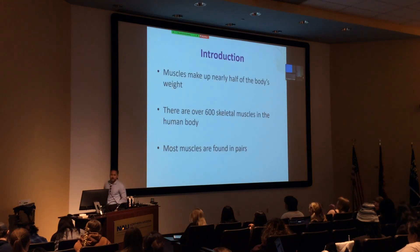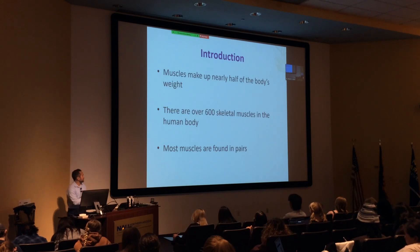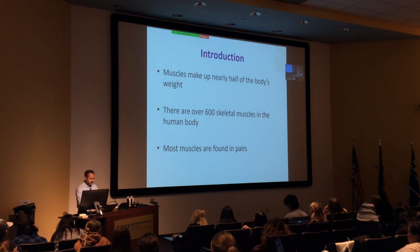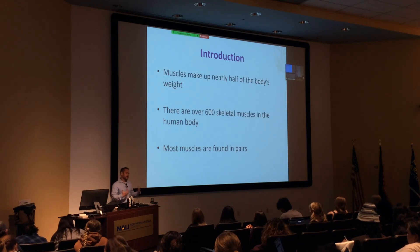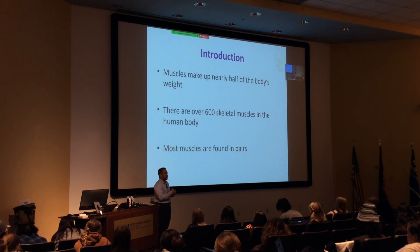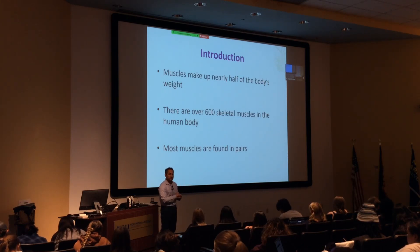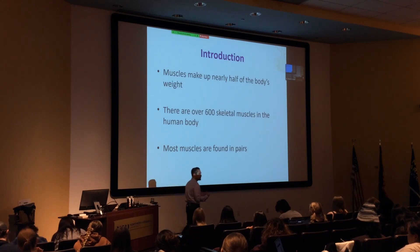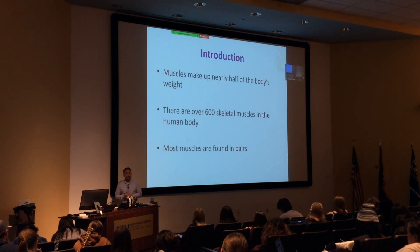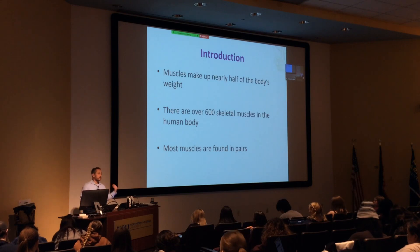So, muscle physiology. Half the body's weight is made up of muscles. There are over 600 muscles in our body, and most of these are found in pairs. You've covered this pretty extensively in lab already. This week you're doing the brain dissection, which should be somewhat fun since you've already had a lot of the lecture physiology on the central nervous system.